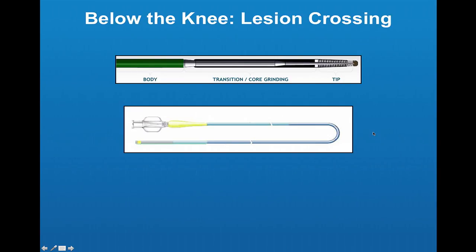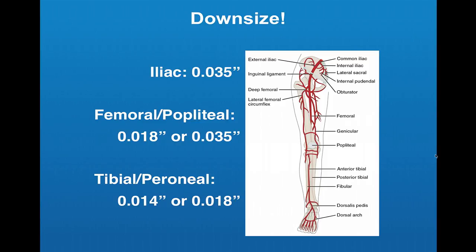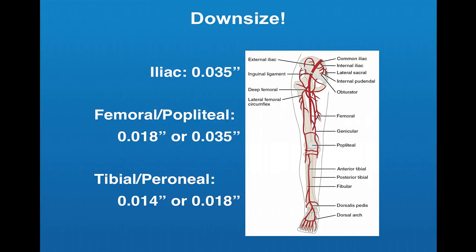For lesion crossing, a key principle is to downsize. Going from the iliac to the fempop to the tibial-peroneal, you move from larger to smaller systems. In terms of wires, this means going from 0.035 to 0.018 in the fempop, and in the tibial-peroneal territory, down to 0.014 or 0.018. Think about wires using a simplified schema: safe, slippery, sharp, and supportive — which allows you to choose the right wire per lesion.